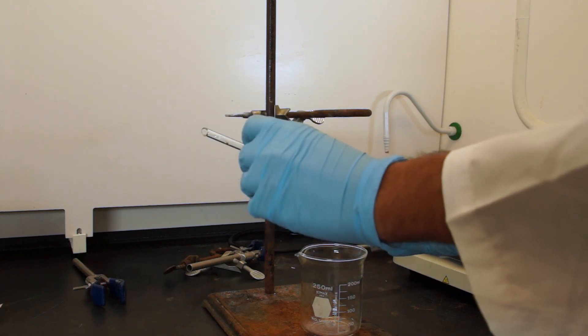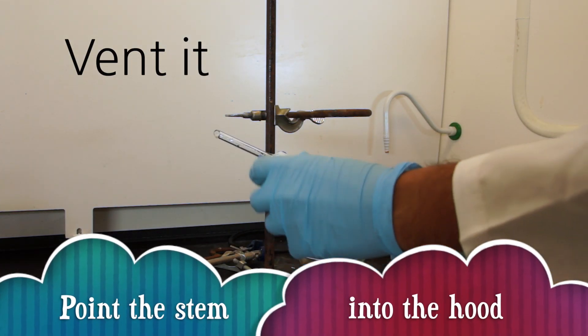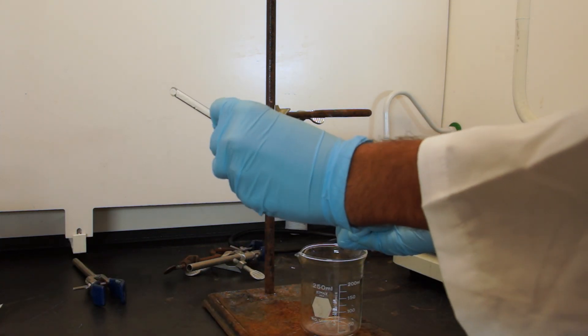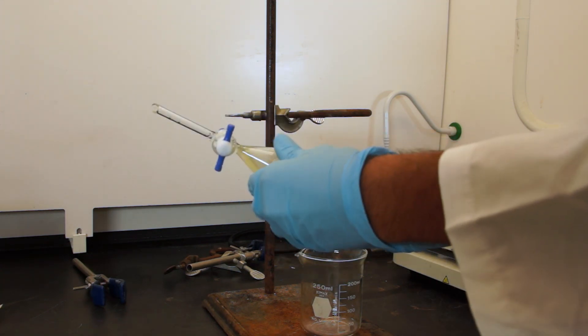Repeat, this is not a drill. Point the tip of the separatory funnel inside the hood while you vent it. Keep shaking and venting a few more times.